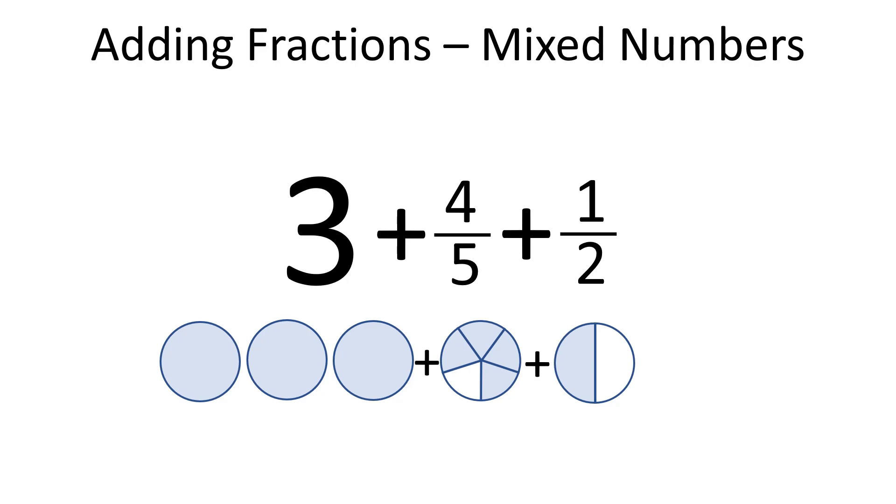That way we have 8 tenths plus 5 tenths. And 8 tenths plus 5 tenths equals 13 tenths.